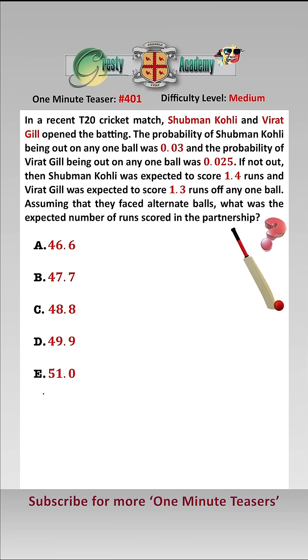We can solve this using recursion, so let's let E be the expected number of runs scored in the partnership. That equals 0.03, which is the probability Kohli is out on the first ball, i.e., scoring zero runs, add 0.